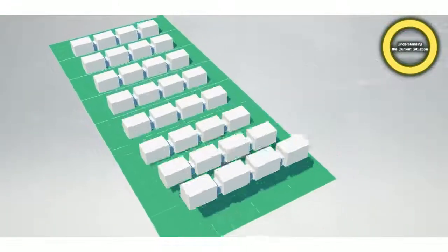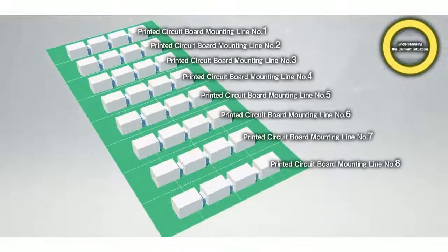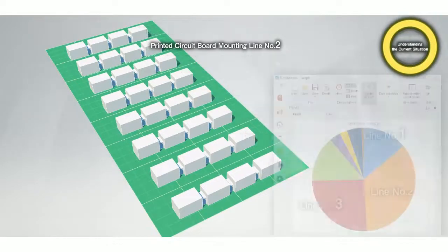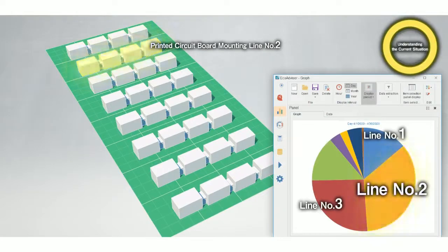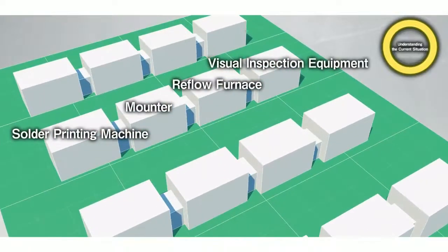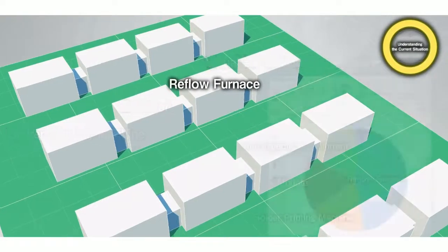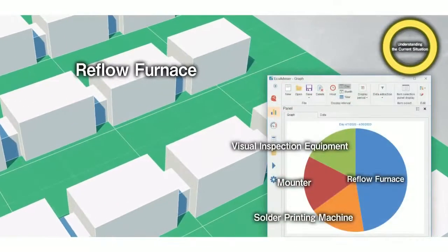Let's look at more details. Among the eight manufacturing lines on the floor, we identified the printed circuit board mounting line number two and found that the reflow furnace was using the most energy of the equipment.